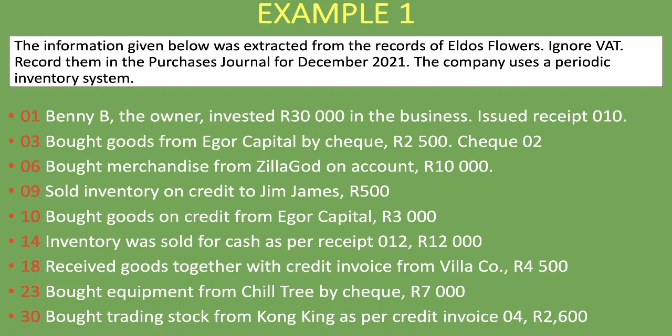The first transaction: Benny B, the owner, invested 30,000 rand in the business, issued receipt 010. This does not go into the purchases journal because the owner is investing capital — that goes into the cash receipts journal. We'll highlight it in purple to indicate it's been left out, and highlight in black what we do include.